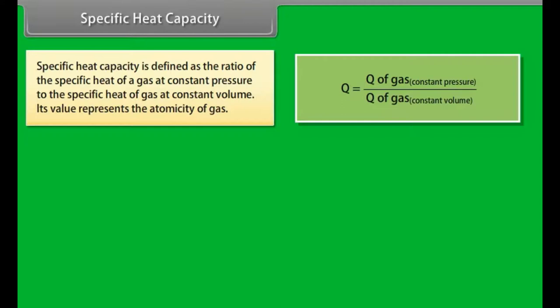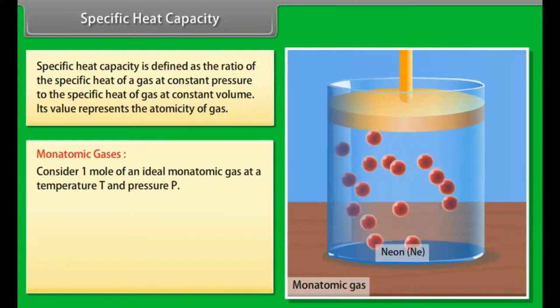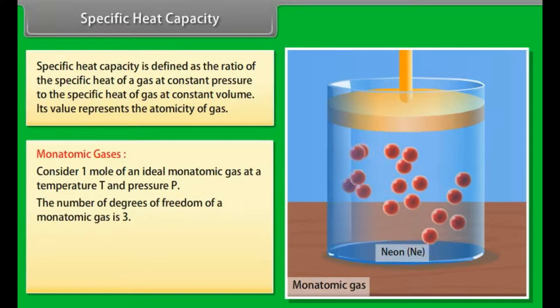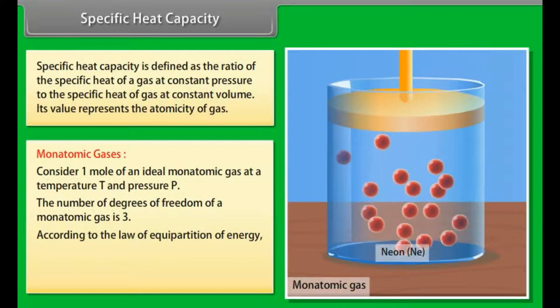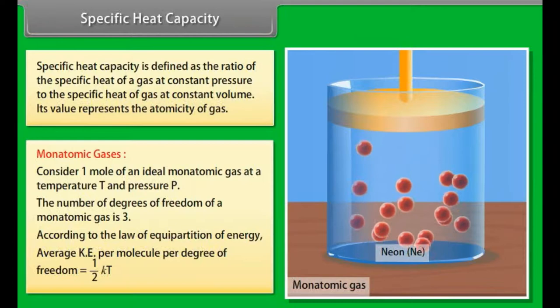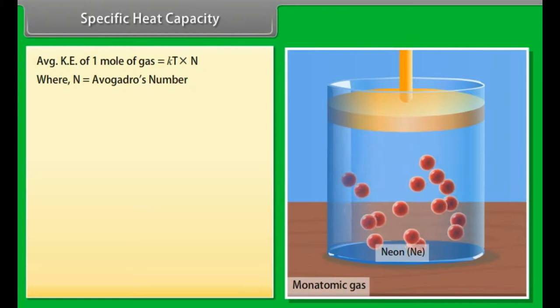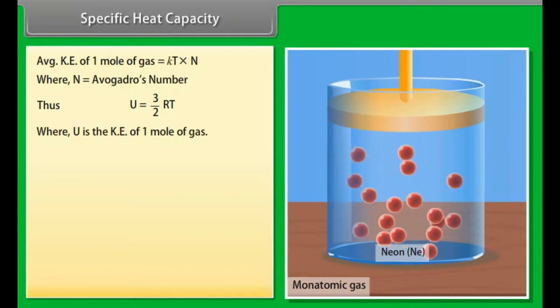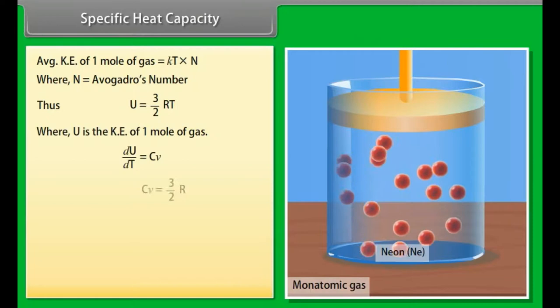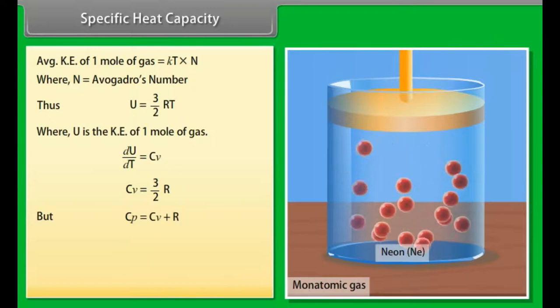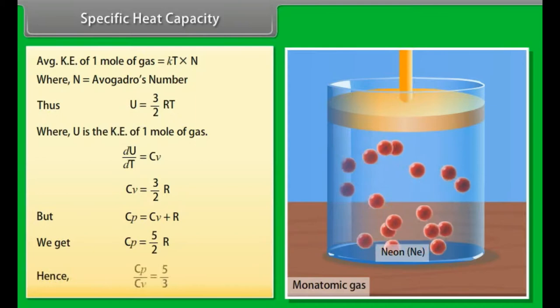Consider one mole of an ideal monoatomic gas at temperature T and pressure P. The number of degrees of freedom of a monoatomic gas is 3. According to the law of equipartition of energy, average kinetic energy per molecule per degree of freedom is ½KT. Average kinetic energy of one mole of gas equals KT × N, where N equals Avogadro's number. Thus U equals 3/2 RT, where U is the kinetic energy of one mole of gas. dU/dT equals Cv. Cv equals 3/2 R. But Cp equals Cv plus R. We get Cp equals 5/2 R. Hence Cp/Cv equals 5/3.